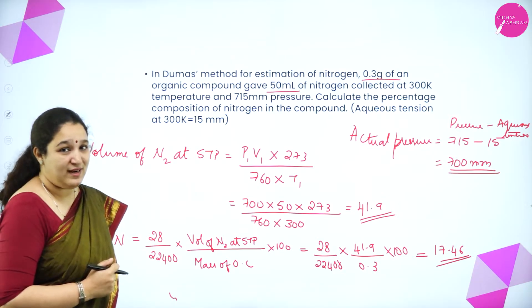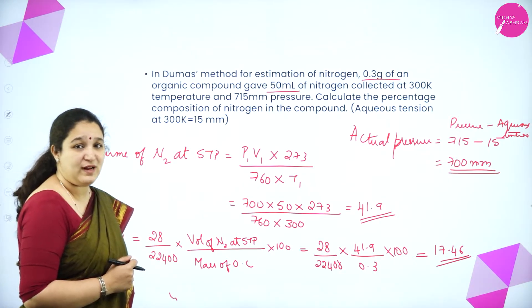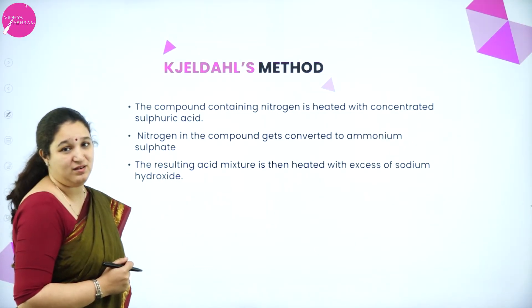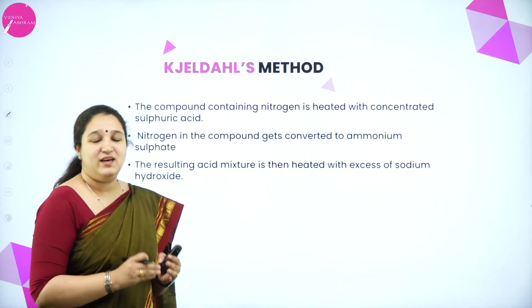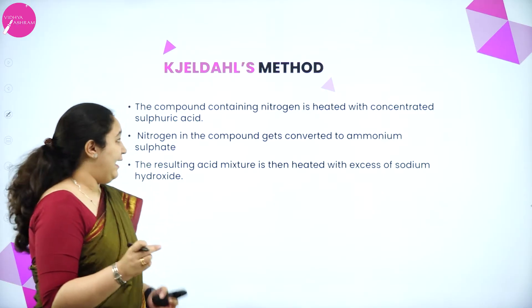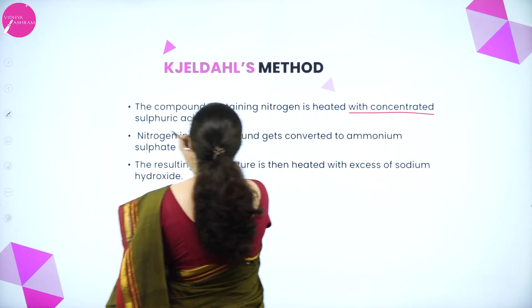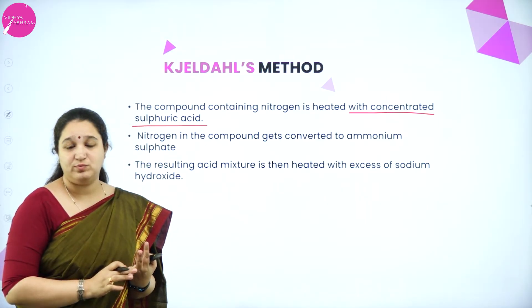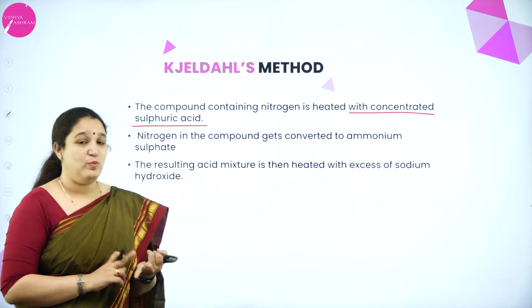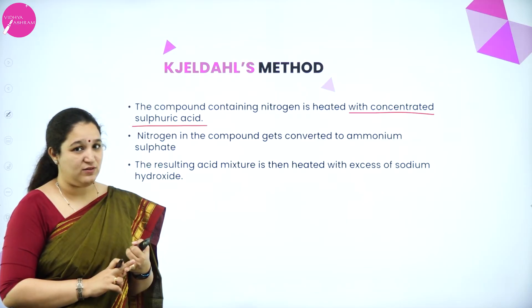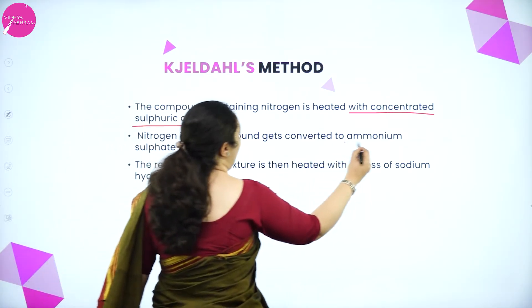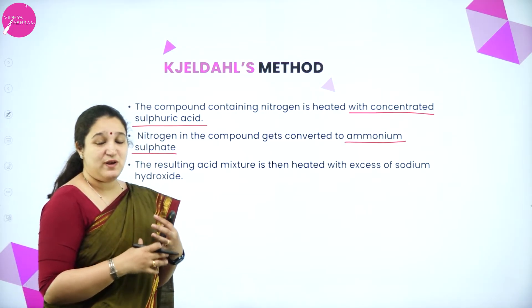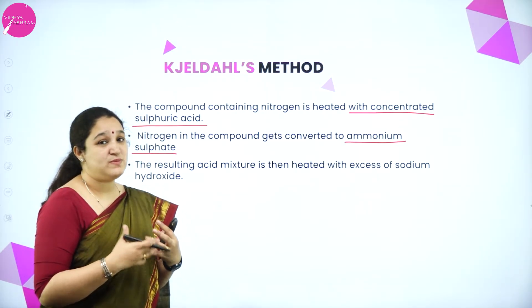Shall we do the next method for estimation of nitrogen? That is Kjeldahl's method. In Kjeldahl's method, we take the organic compound and heat it with concentrated sulfuric acid. The organic compound contains nitrogen, and when heated with concentrated sulfuric acid, it gets converted to ammonium sulfate. This process is called digestion.